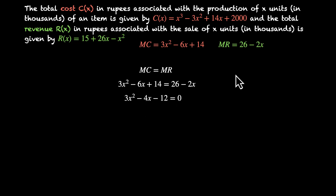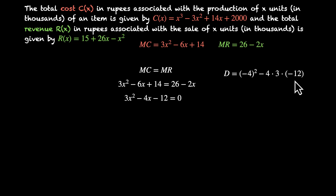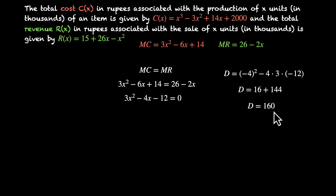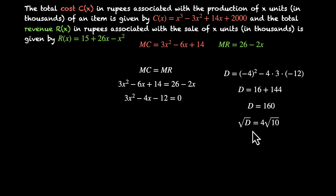We use the discriminant formula: D = b² - 4ac = (-4)² - 4(3)(-12) = 16 + 144 = 160. The square root of 160 is 4√10, since 160 = 16 × 10, and √16 = 4. So √D = 4√10.